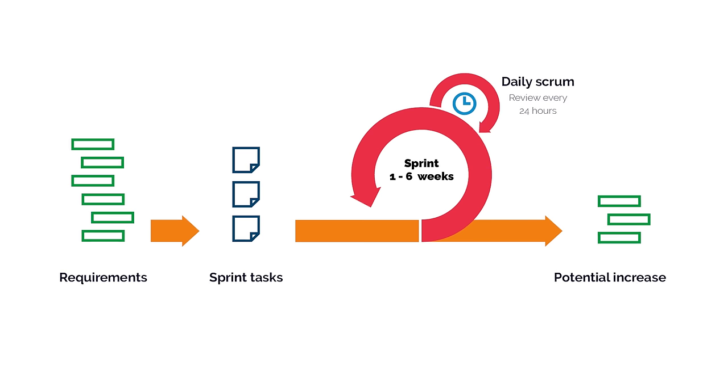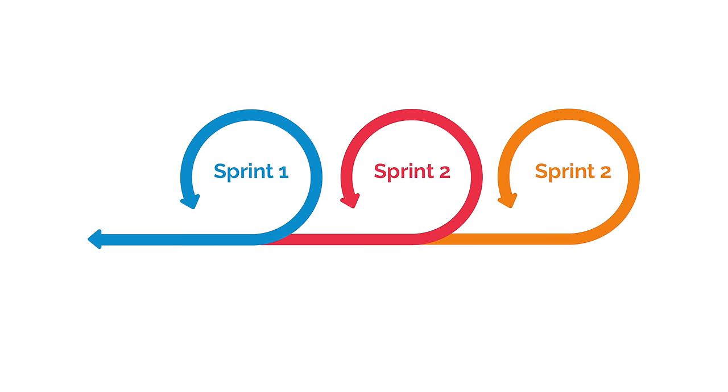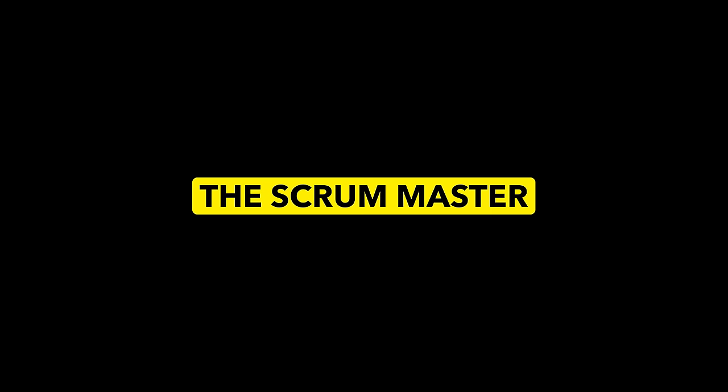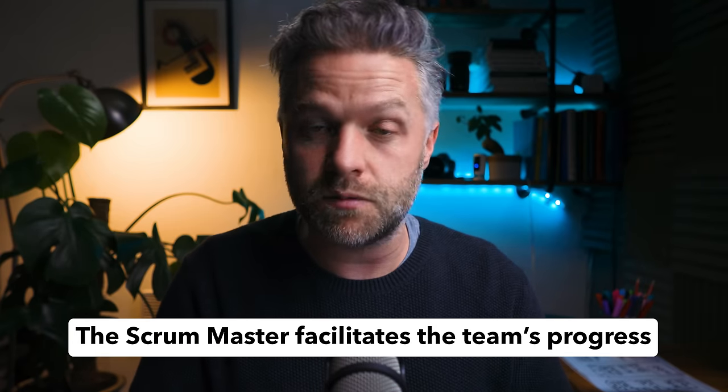First up, it's Scrum. Perhaps the most widely recognised Agile methodology, Scrum focuses on dividing projects into smaller, manageable tasks called user stories, which are then completed within fixed-length iteration cycles called sprints. Sprints usually last between one and six weeks. At the end of each sprint, the team reflects on the work they've done and makes adjustments as needed. One of the key roles in Scrum is the Scrum Master — someone who facilitates the team's progress and ensures that the Scrum principles and framework are followed.